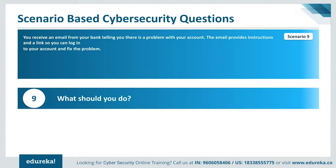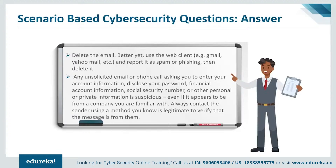Scenario 9: You receive an email from your bank telling you there is a problem with your account, providing instructions and links to log in and fix the problem. You should delete the email and use your web client to report it as spam or phishing. Any unsolicited email or phone call asking you to disclose your password, financial account information, social security number, or other private information is suspicious — even if it appears to be from a familiar company. Always contact the sender using a method you know is legitimate to verify the message.